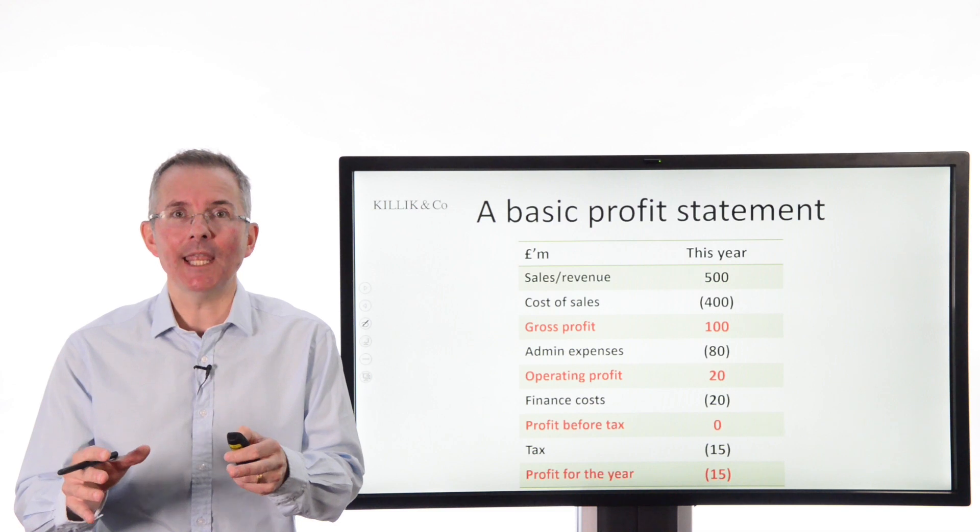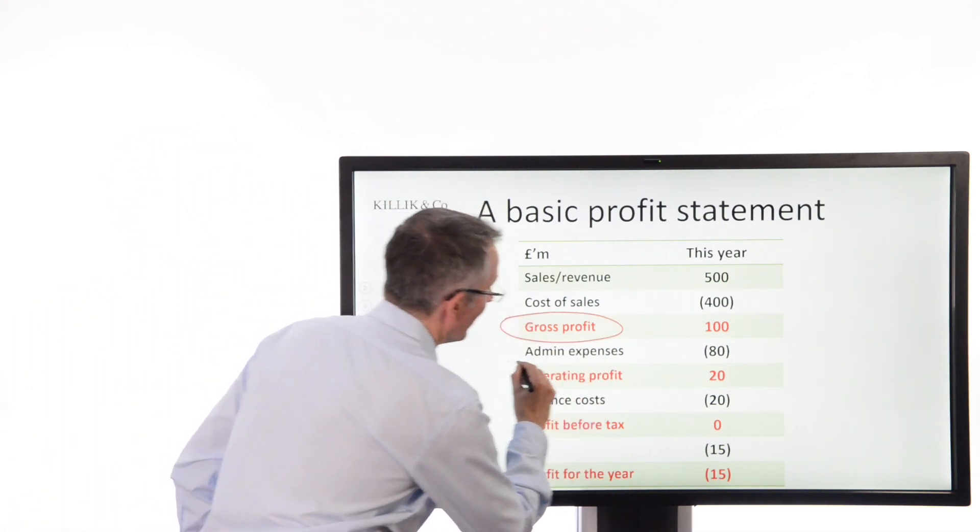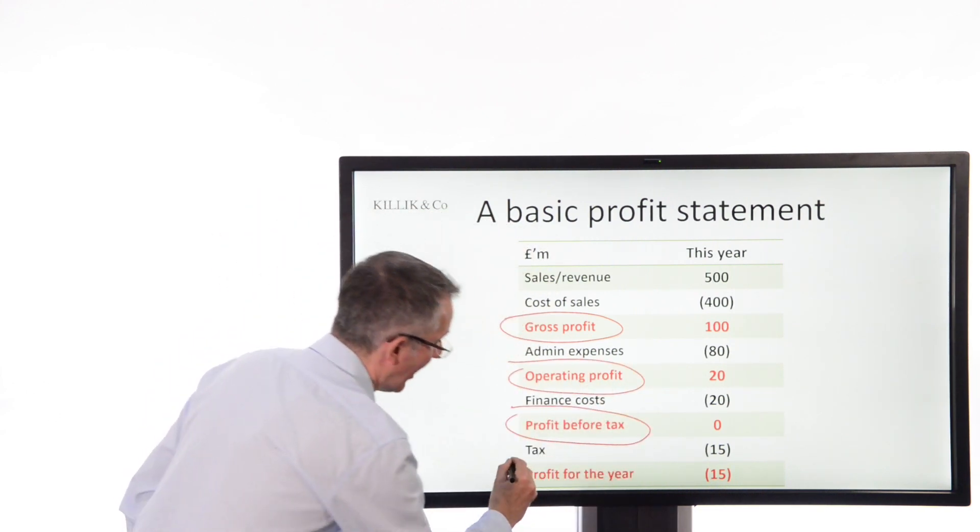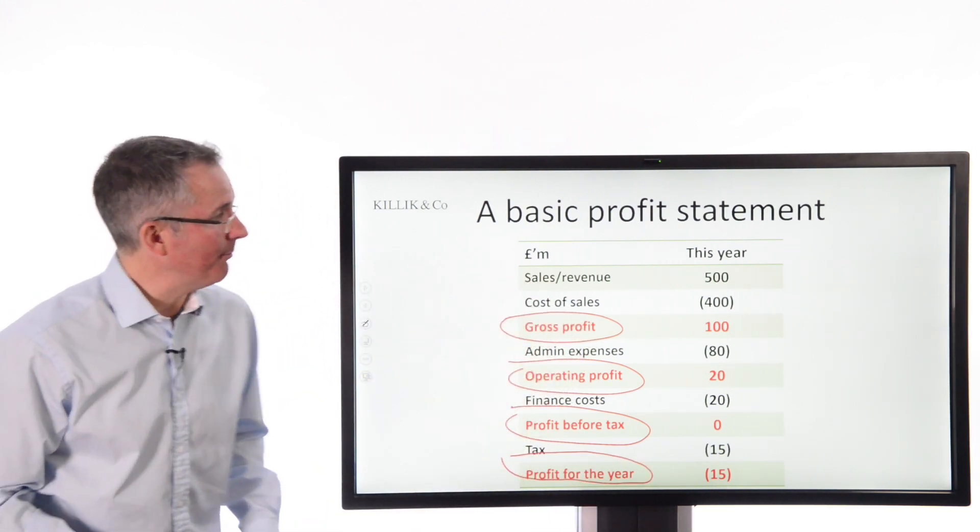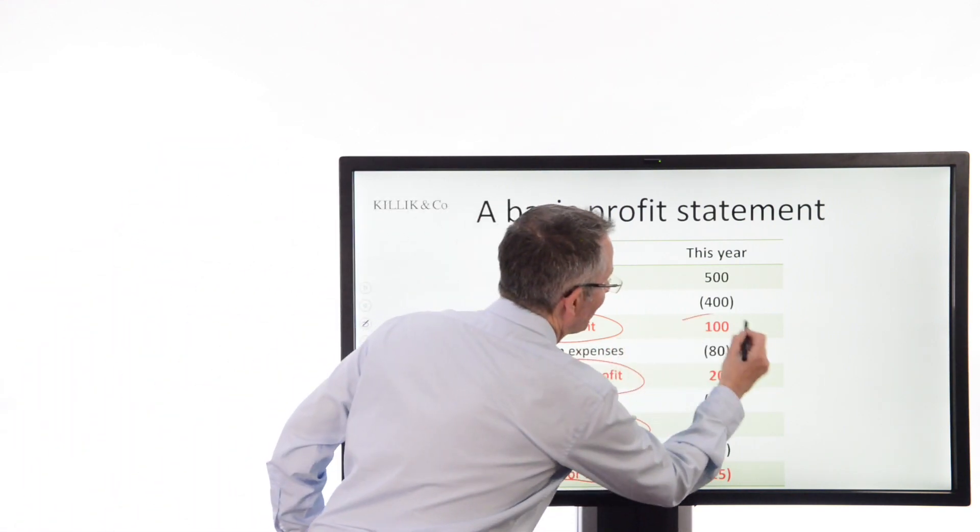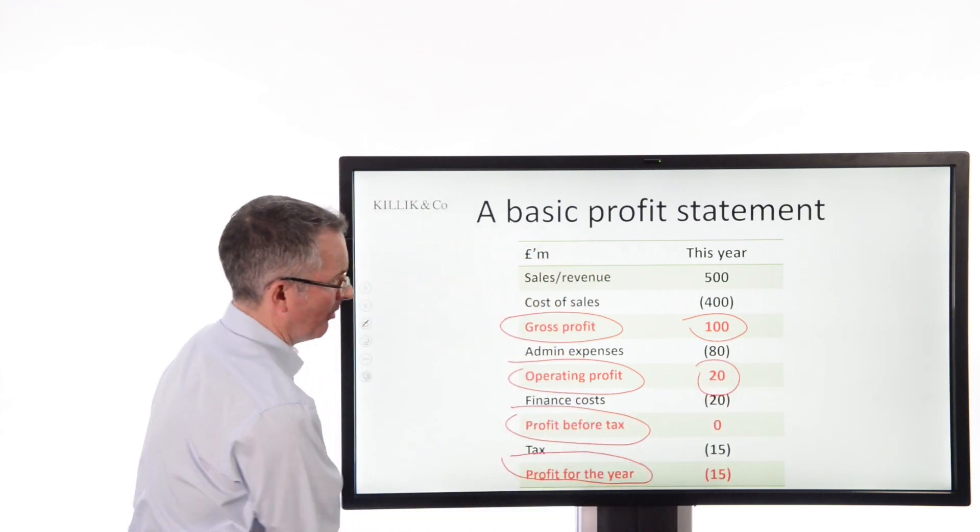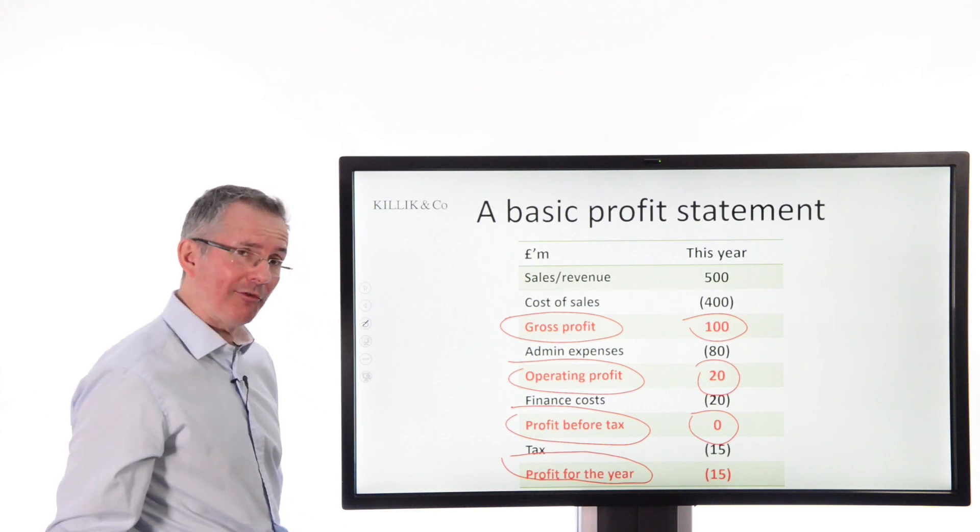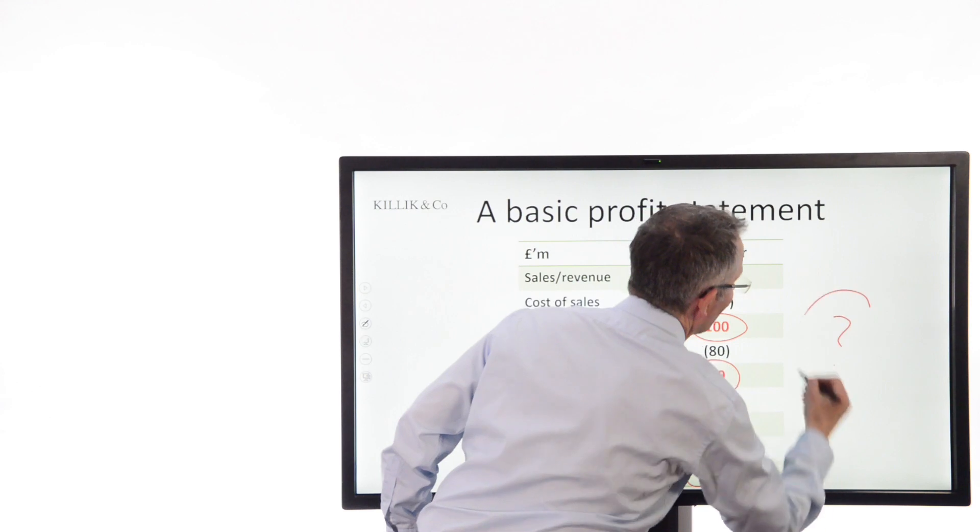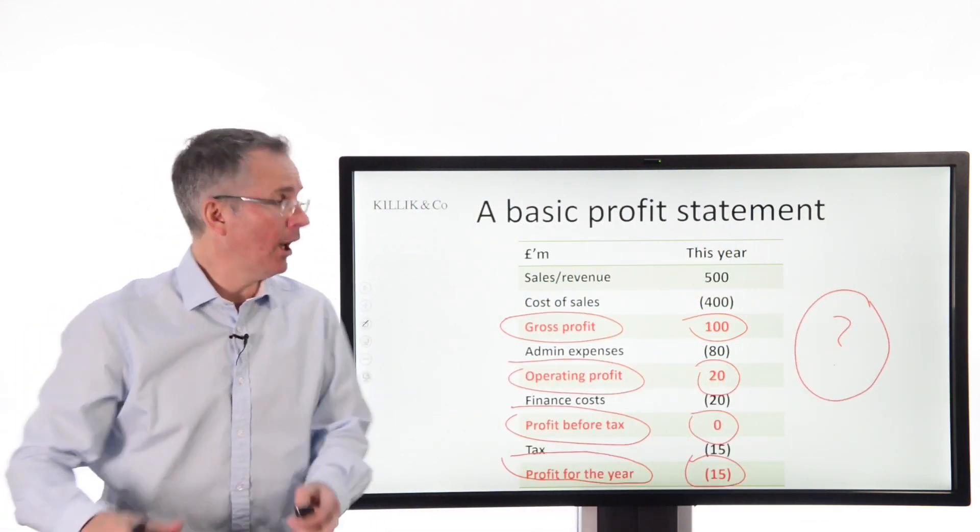So a basic profit statement for a UK company could include at least four different measures of profit. There's gross profit, there's operating profit after overheads, there's profit before tax after finance costs and there's profit for the year at the bottom. And if you look at my very simple example here and I have simplified, you'll notice that the gross profit is positive and large, the operating profit after overheads is quite a bit smaller, the profit before tax is zero and if you knock off tax you end up with a negative number. So what on earth are you supposed to make of those? Which one is the most reliable? Now a lot of analysts will start with the operating profit number as it happens but you can see the problem.